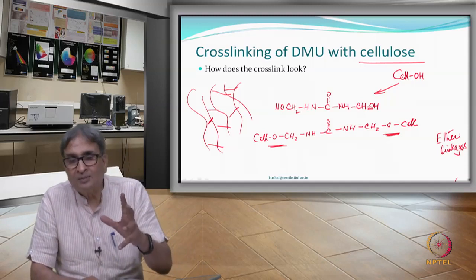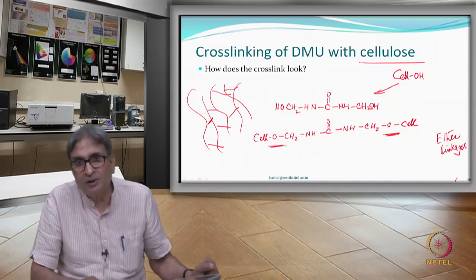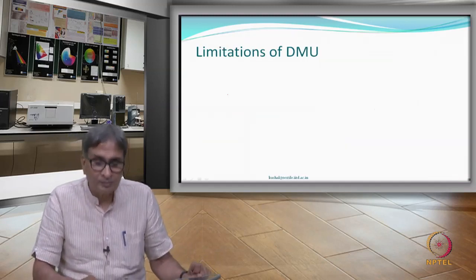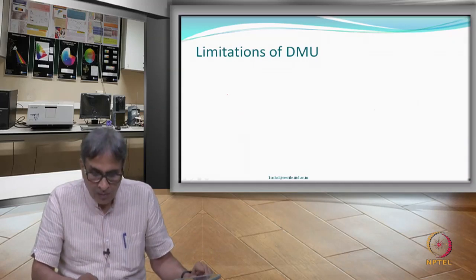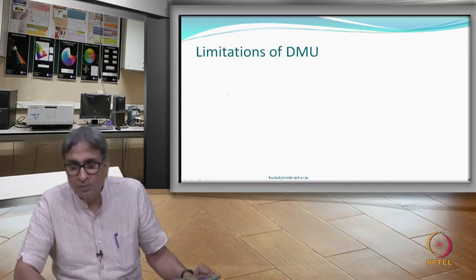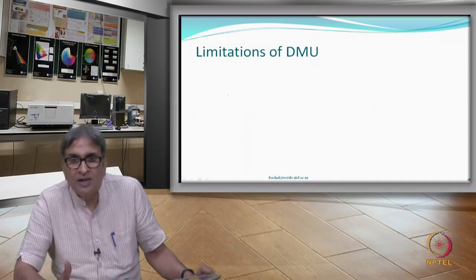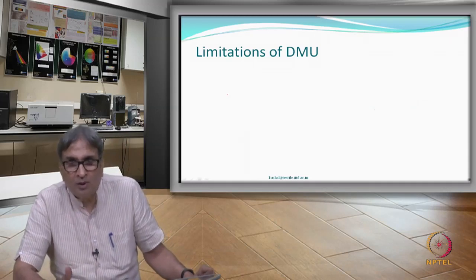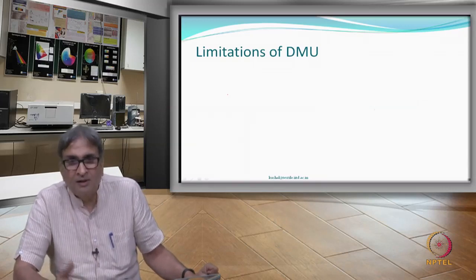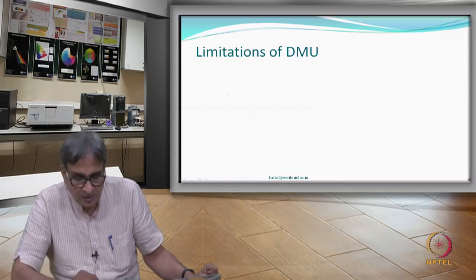So DMU — dimethylol urea — can react with cellulose to make a cross link of this type, and once this cross link is formed, we have made some cross links which will hopefully help in recovery from the strains caused by bending and creasing. In some sense we have solved the problem.